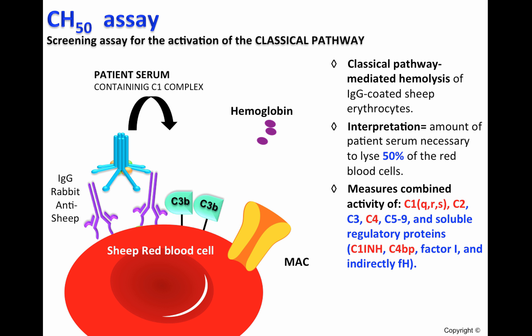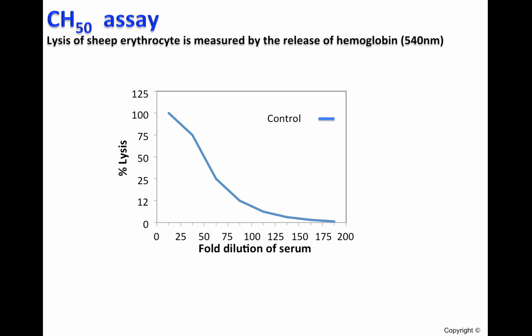If a complement component is absent, such as C1, which is specific to the classical pathway, and C2, C4, also found in the classical pathway when shared by the lectin pathway, and other components including certain regulatory proteins, the CH50 level may be zero. If one or more components of the classical pathway are decreased, the CH50 will be decreased.